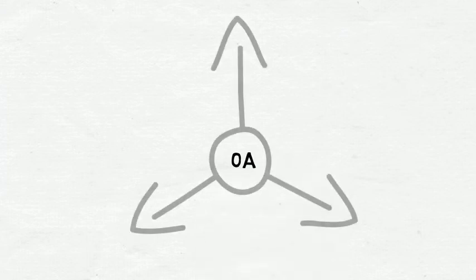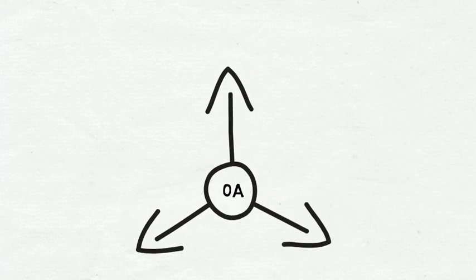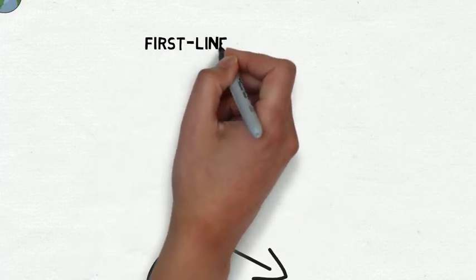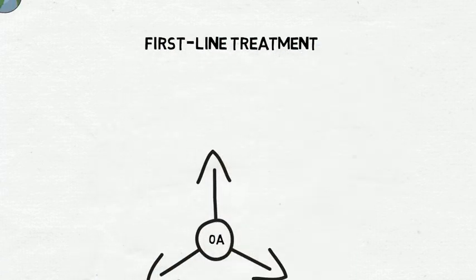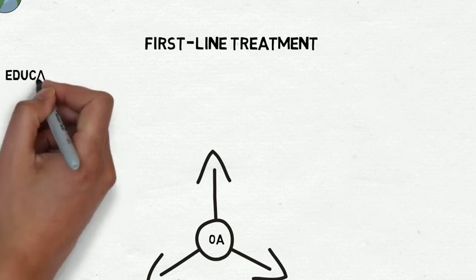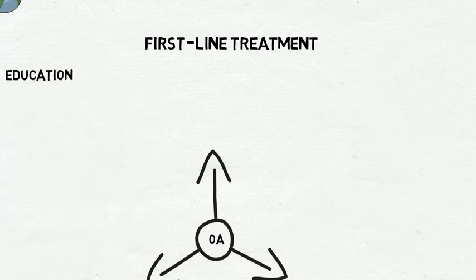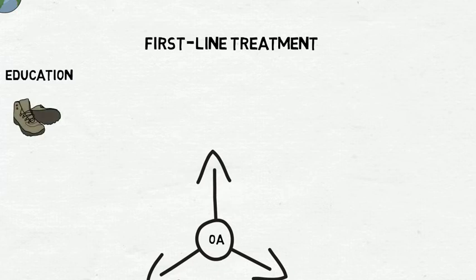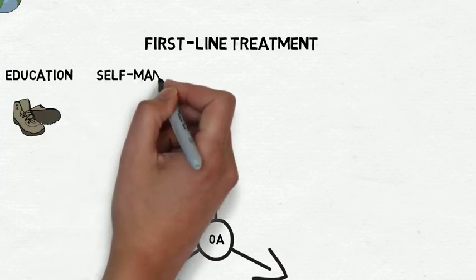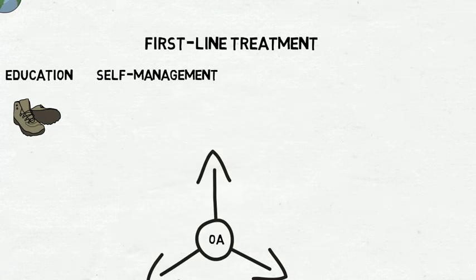Everyone with osteoarthritis should receive first-line treatments. First-line treatments include education, for example, advice on appropriate footwear for people with lower limb osteoarthritis. It includes self-management, such as the application of heat or cold.